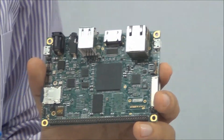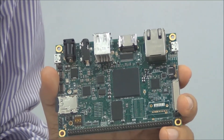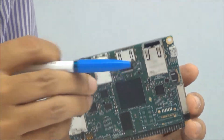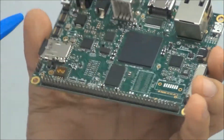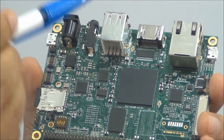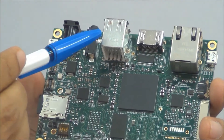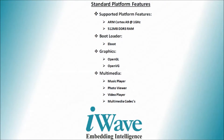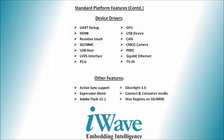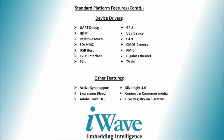Apart from this, the BSP supports memory and storage interfaces like eMMC. You have support for SDMMC, and you can also connect a USB pen drive. Other peripheral features supported include USB, CAN, UART, I2C. It has an HDMI port, it also includes an LVDS Display port, and you have a resistive touch solution onboard.